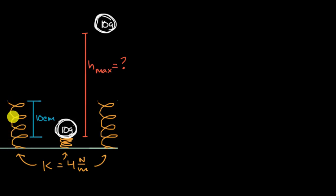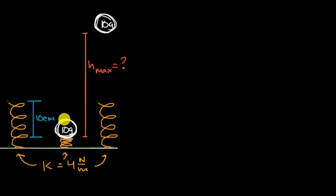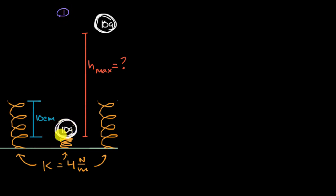I have an uncompressed spring with a spring constant of four newtons per meter. I take a 10 gram ball and put it at the top of the spring, then push down to compress that spring by 10 centimeters. Let's call that scenario one, where our mass is on top of this compressed spring.